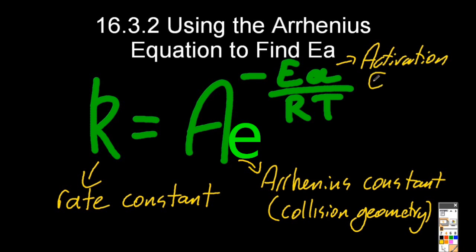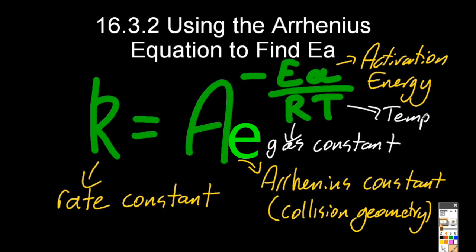Ea is the activation energy, minimum energy required for a reaction to occur. R is the gas constant, 8.314 in the standard units, and the temperature, don't forget to measure it in Kelvin, or it won't work.